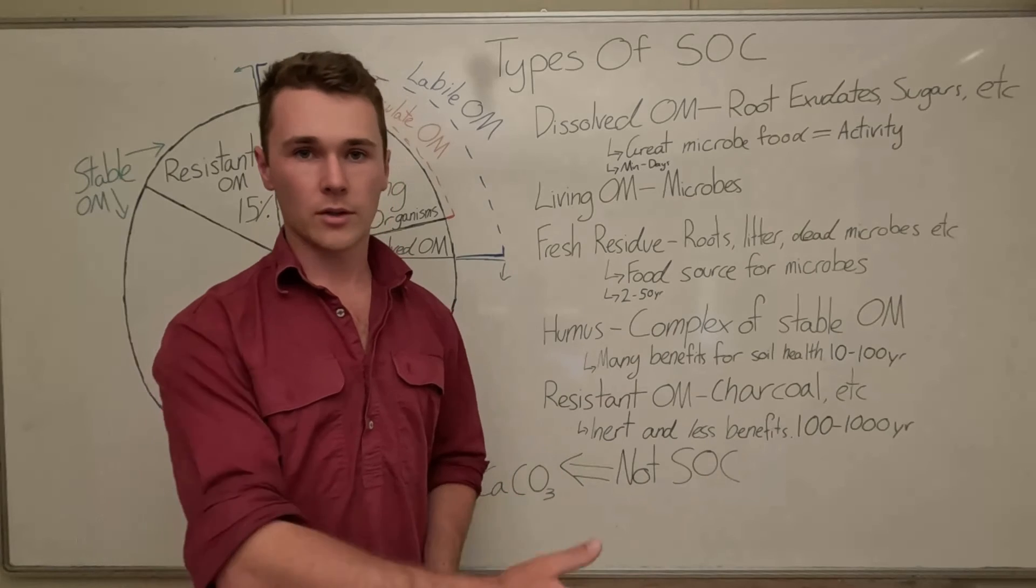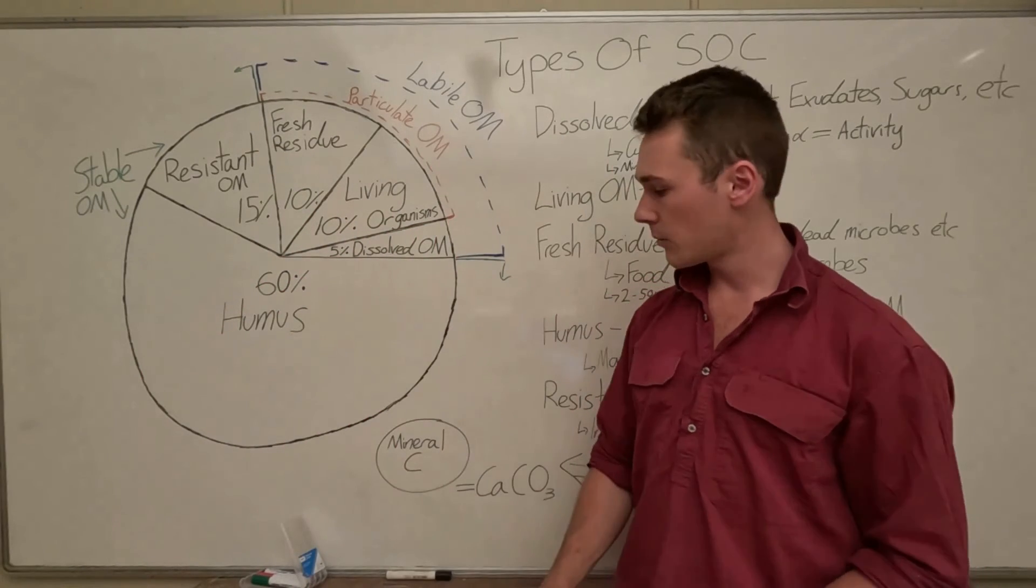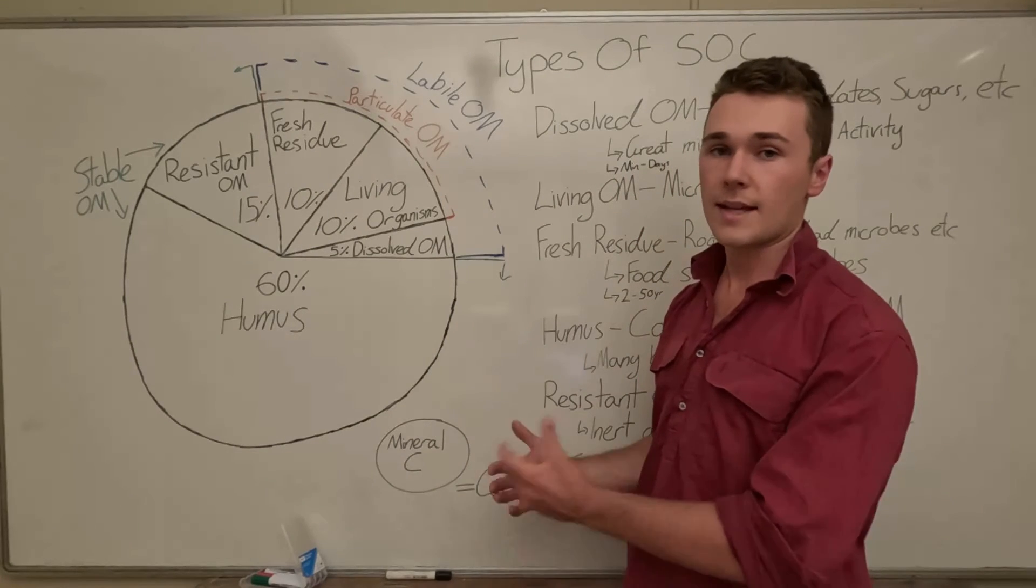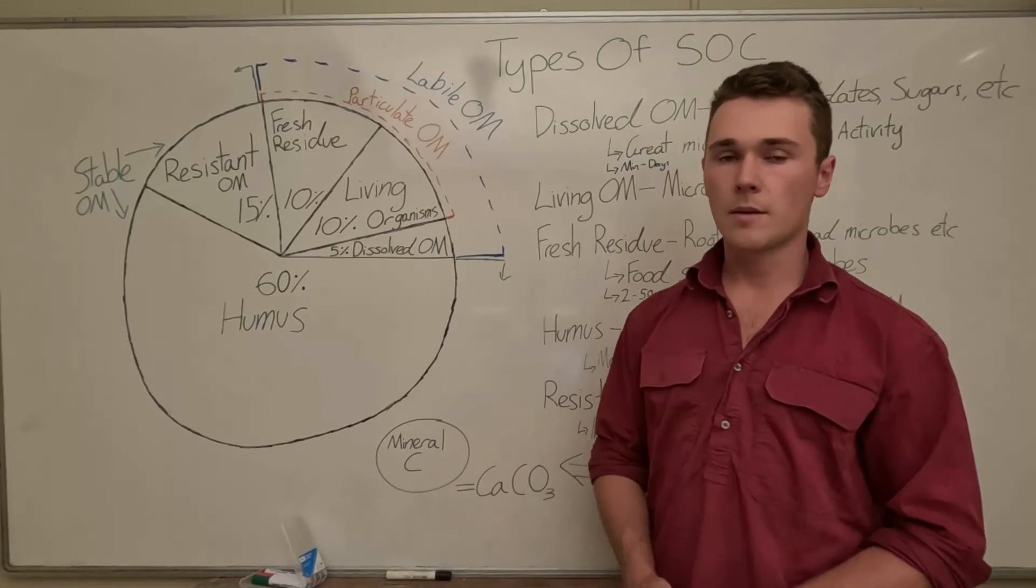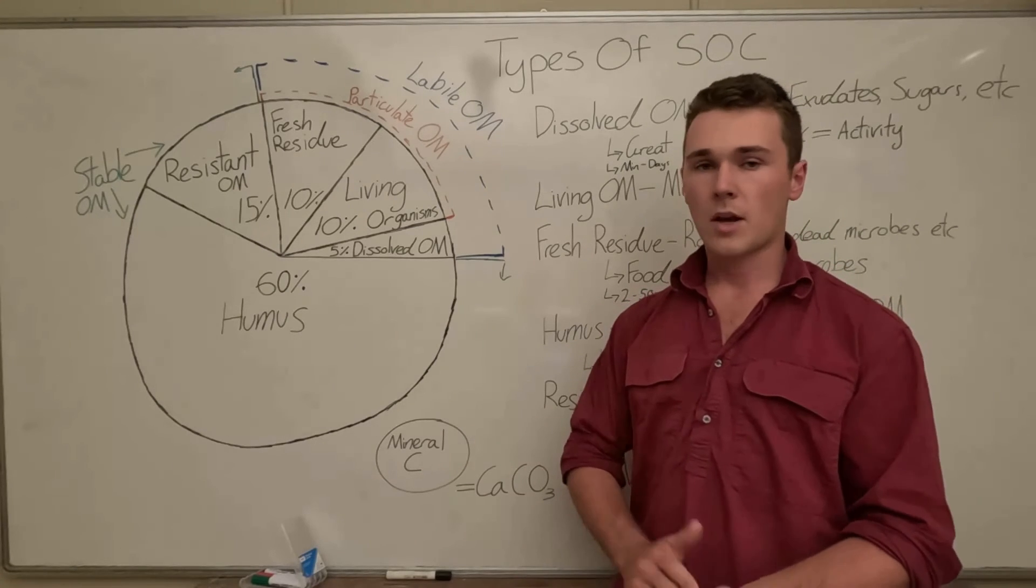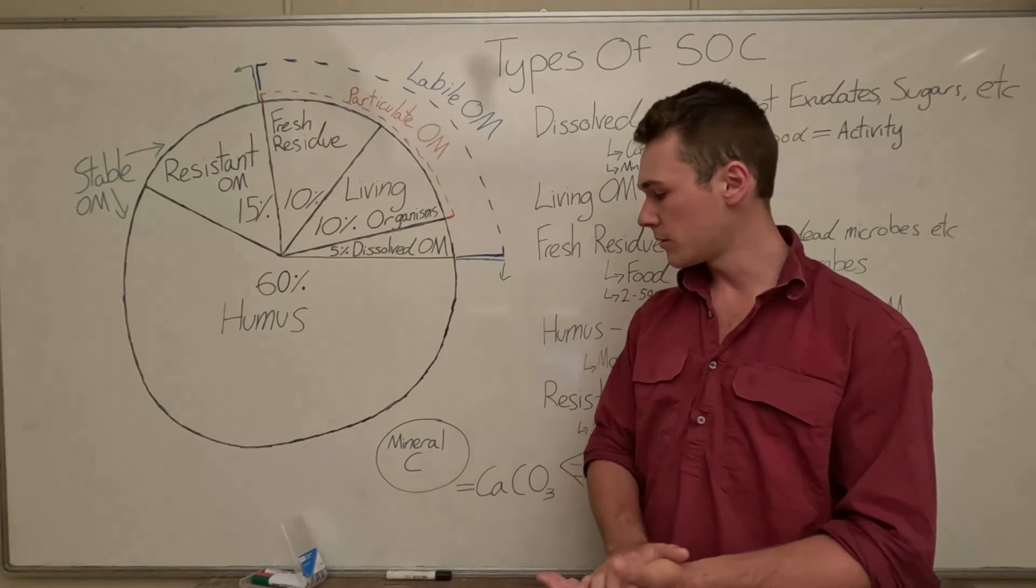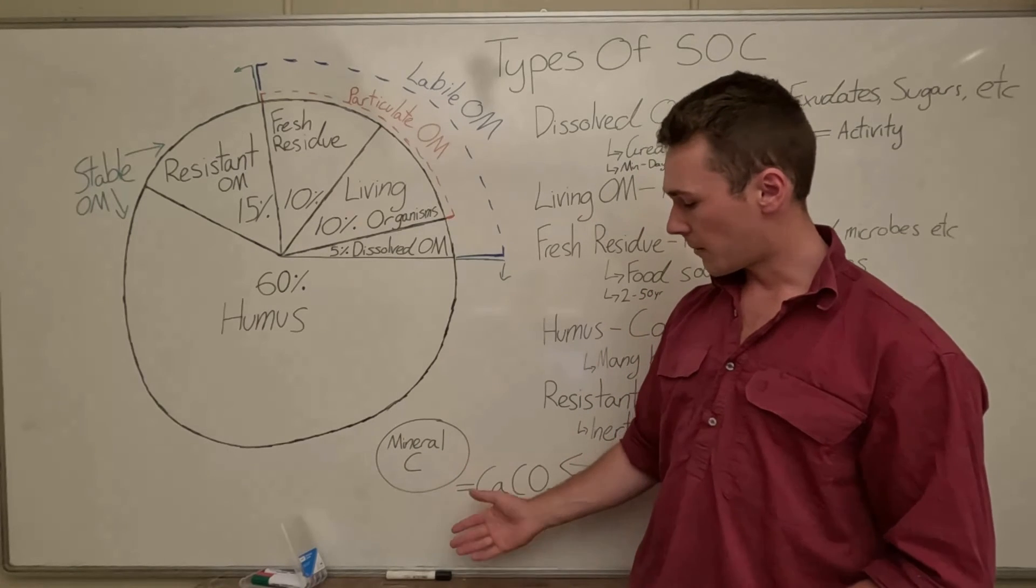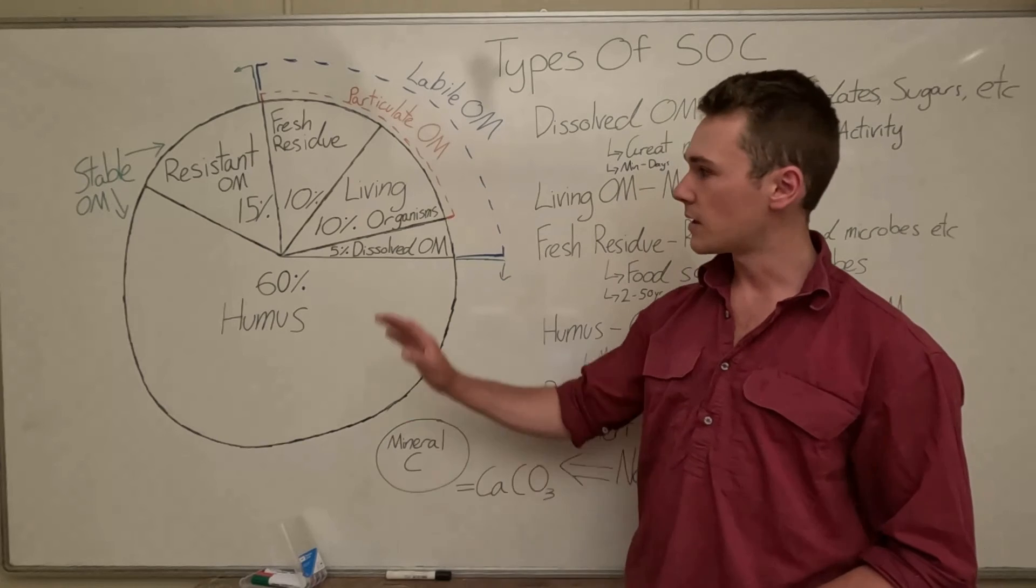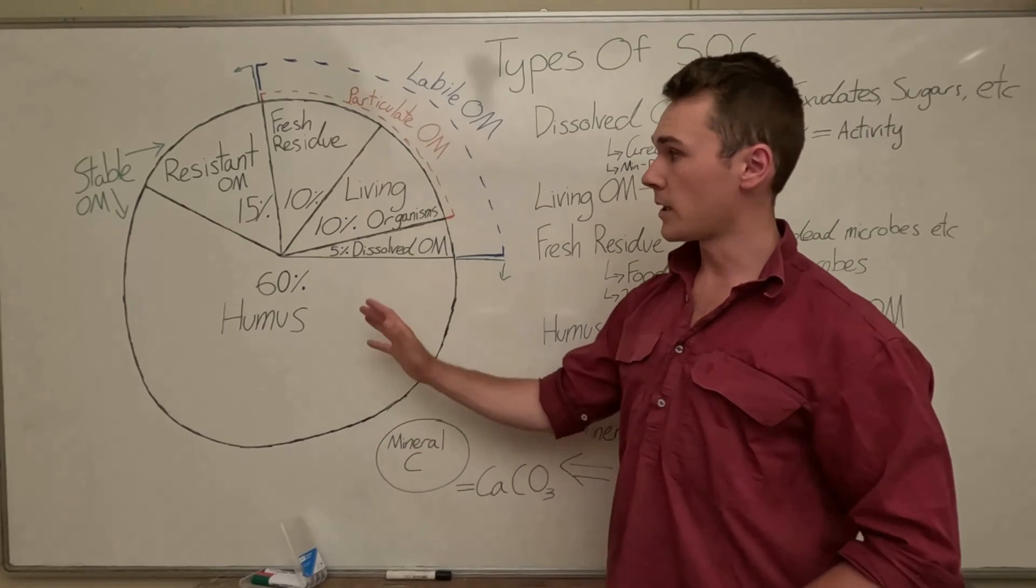So when we have things like calcium carbonate which is a mineral that's not soil organic carbon and the amount of that in your soil depends on your soil's parent material so sometimes you can get high amounts of gypsum or lime in your soil naturally occurring but really that doesn't really have the same benefits that our soil organic carbon has.